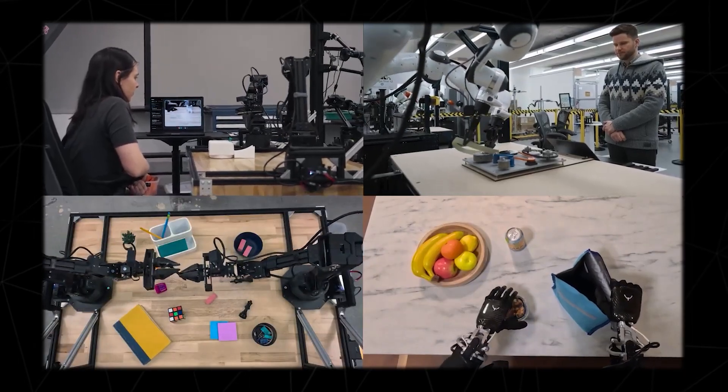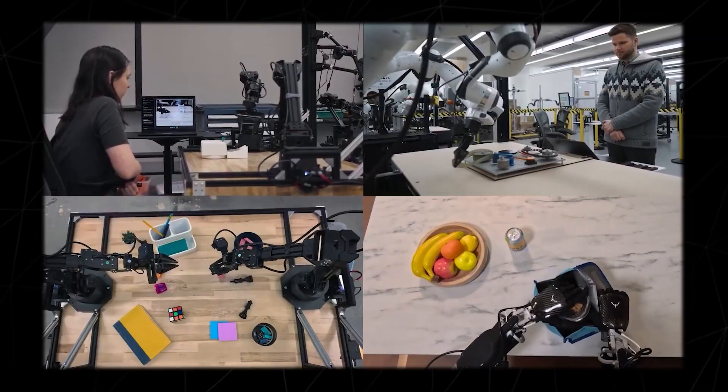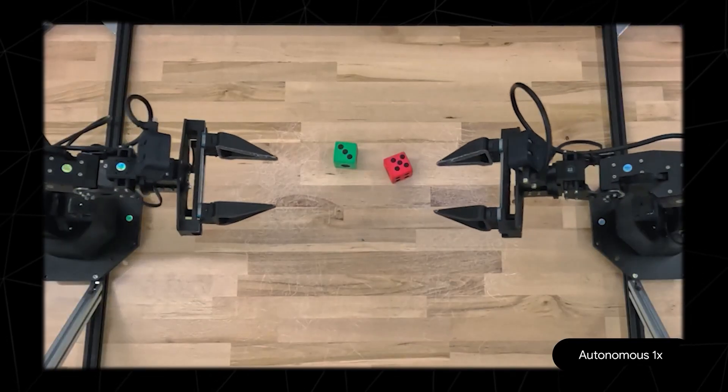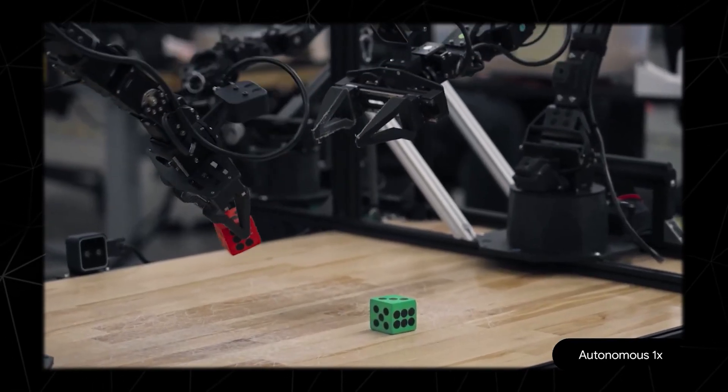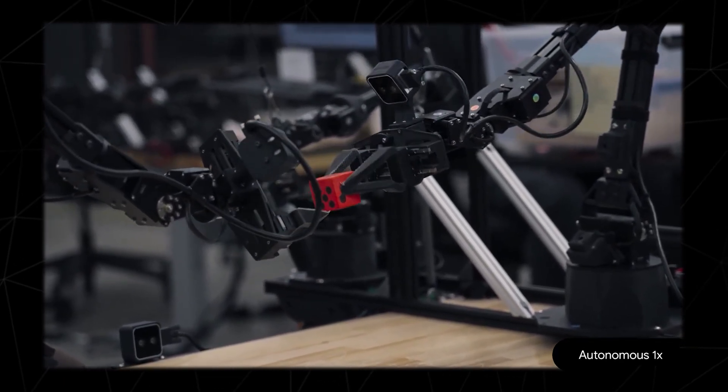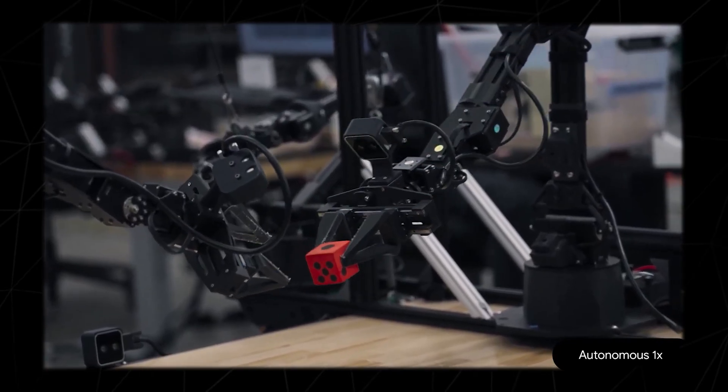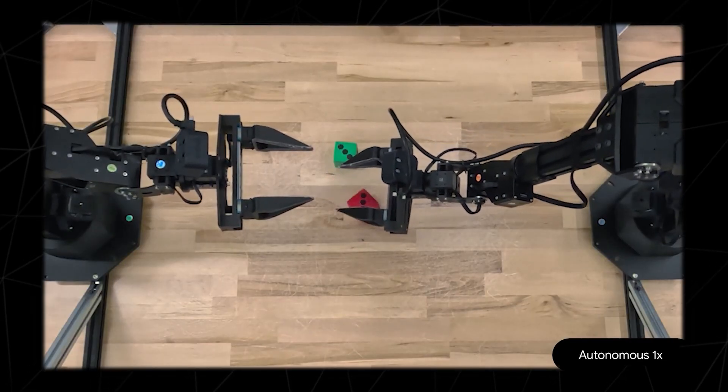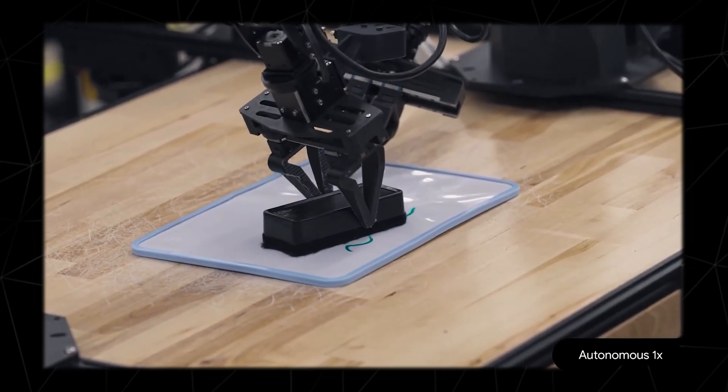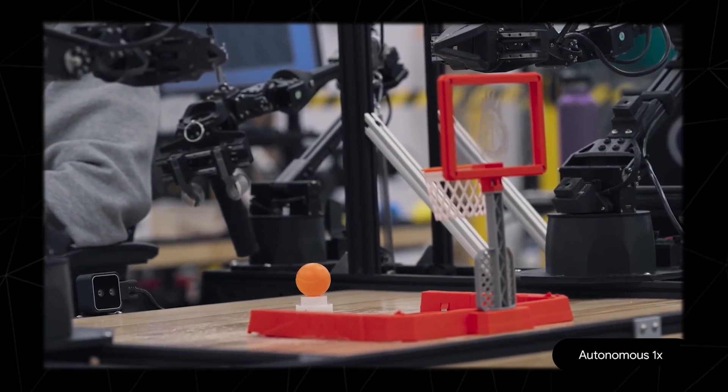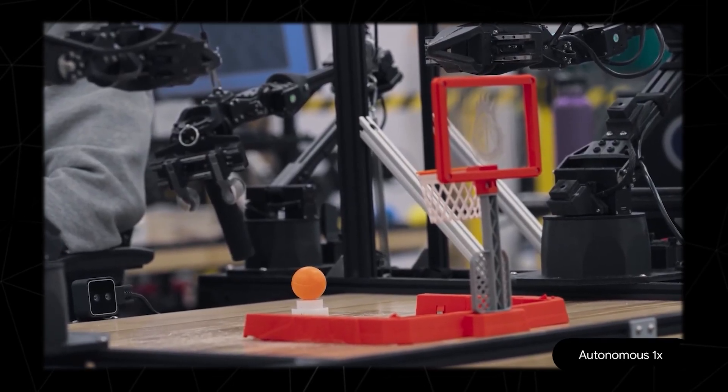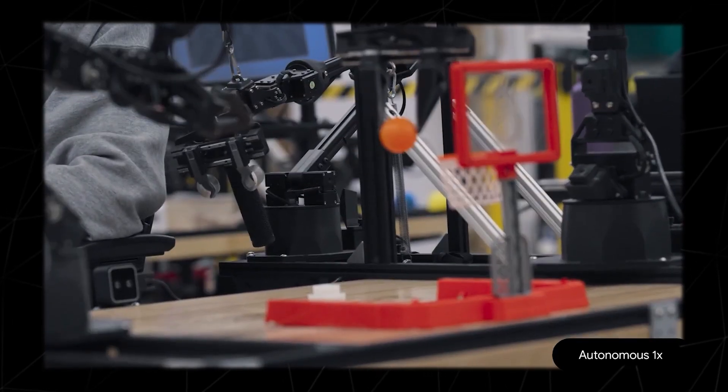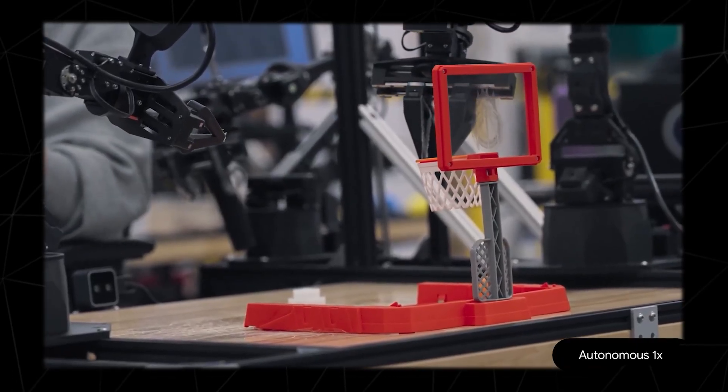Most importantly, Gemini Robotics is general. It uses Gemini 2.0's world understanding to generalize across a vast range of real-world tasks. Can you flip the red die so that it matches the number on the green die? Many robots can execute predefined actions, but these movements are not predefined. The robot is reasoning both about what it sees and how to move. It figures out how to make the red die match just like we asked. And this generalization goes even further. This same model can generalize to tasks like this one that it's never been trained to do. Pick up the basketball and slam dunk it. Keep in mind, these are objects the robot has never seen before. But by leveraging Gemini 2.0's understanding of concepts like basketball and slam dunks, the robot figures out the task.